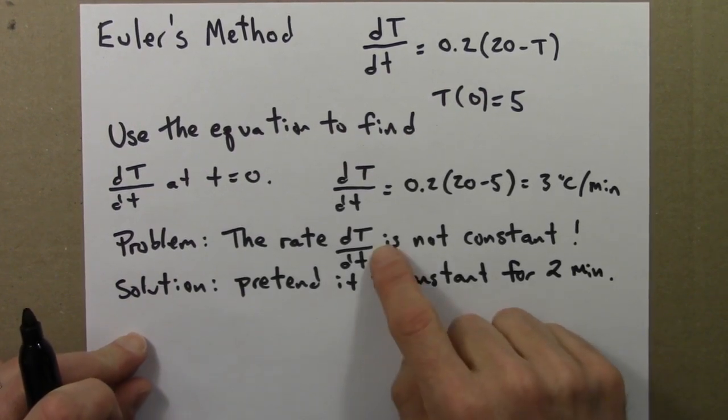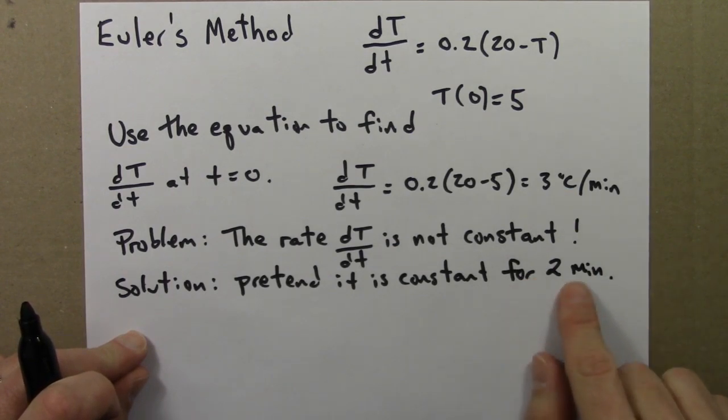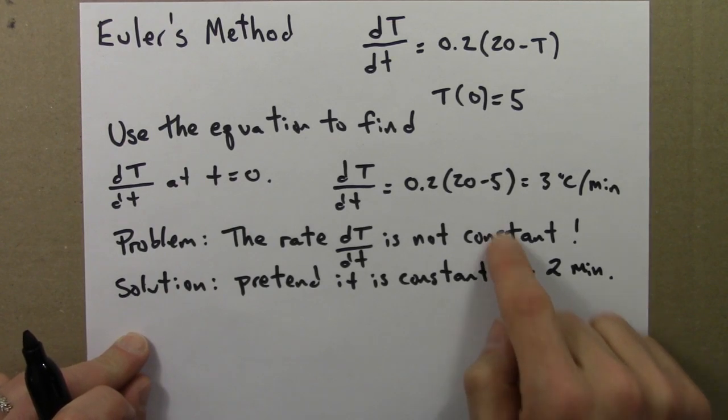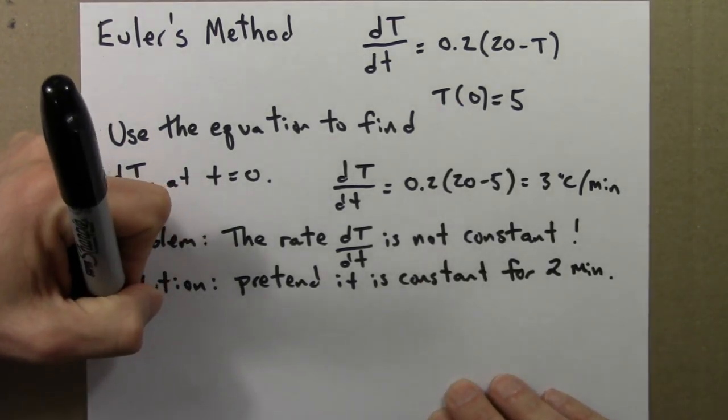We'll pretend that this rate is constant for 2 minutes. It's not, but we're just going to act as if it is. And if this rate is constant for these 2 minutes, then I can figure out the temperature 2 minutes later.